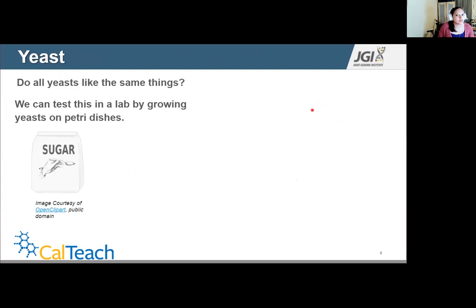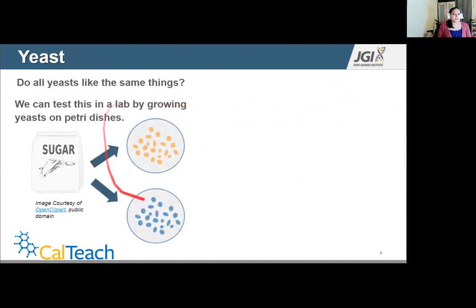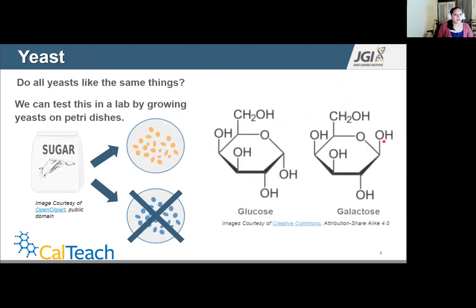Now comes the question, do all yeast like the same things? We can test this in a lab by growing yeast on Petri dishes. We end up seeing that one yeast species is able to grow on the sugar given to them, but the other is not. And the specific sugar is called galactose.